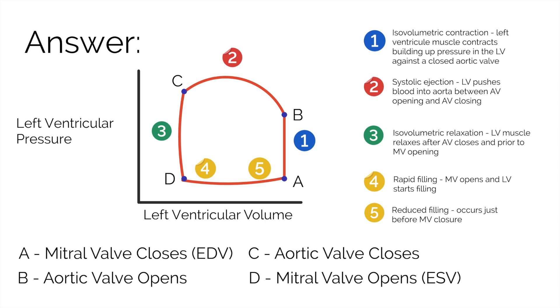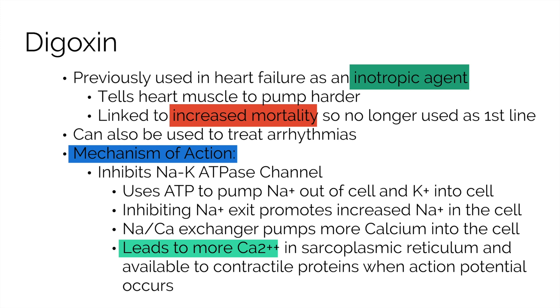Since we have covered the details of the pressure volume loop, let's talk about digoxin and its effects on the heart. Digoxin has traditionally been used in congestive heart failure as an inotropic agent. An inotropic agent changes how strongly a muscle contracts. Digoxin is a positive inotrope, meaning it makes the heart pump harder and with more strength. Though digoxin was previously frequently used in heart failure, it currently is not a first-line drug, given its use is associated with increased mortality. In addition, digoxin can be used for arrhythmias through an unknown effect on the parasympathetic system.